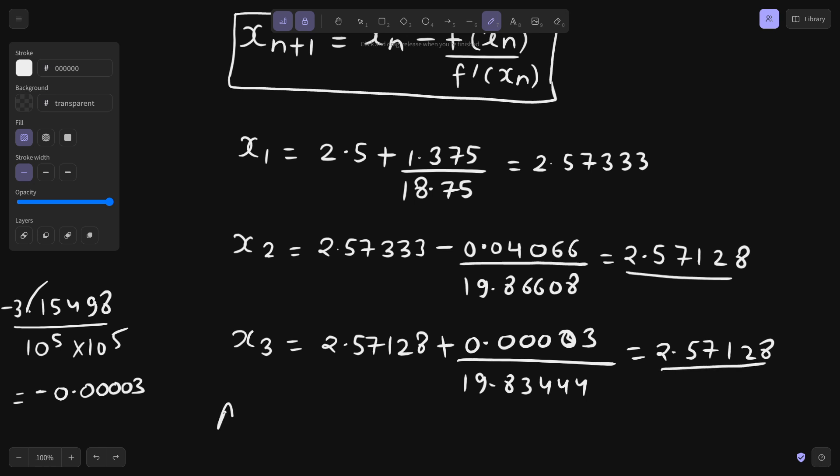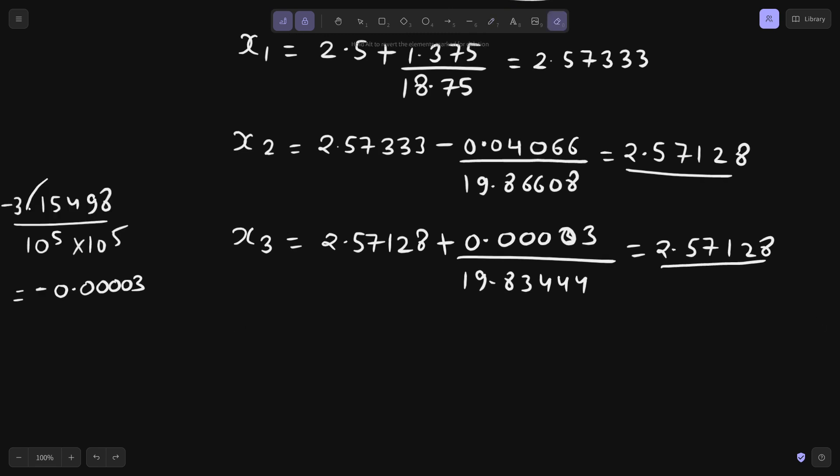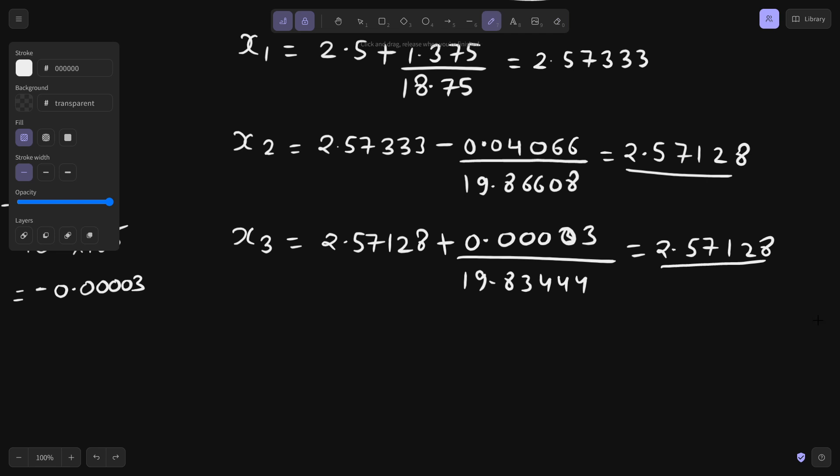If I write the approximate value, the approximate we need to write here that since x2 and x3 are matching till 4 places, minimum 4 places, we can write 5 places.